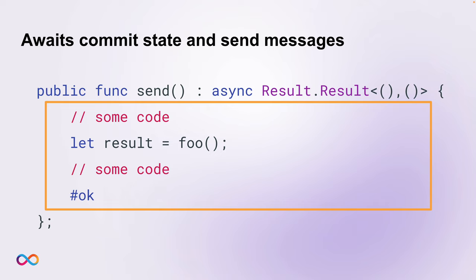Now I want to mention some caveats when doing inter-canister calls — things you might not be aware of when starting out. First we need to understand a few properties about message execution on the Internet Computer. Only a single message is processed at a time per canister, and message execution is sequential and never parallel for a single canister. Also, a shared function call that executes without executing an await expression never suspends and executes atomically — meaning as a single message.